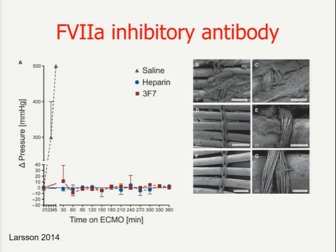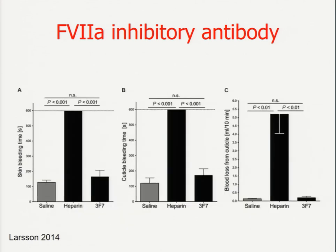More promising is a factor VIIa inhibitory antibody — this is new, with the first studies from 2014. In the control with no anticoagulant, almost immediately the fibers are blocked by thrombus. With heparin, there is some formation but the circuit remains open. With this anti-VIIa antibody, there is a very nice patency of the fiber stack. Importantly, the results for bleeding risk are comparable with saline — meaning we take away the negative effect at the level of the foreign material, but maintain to a very high degree the patient's potential to clot normally.